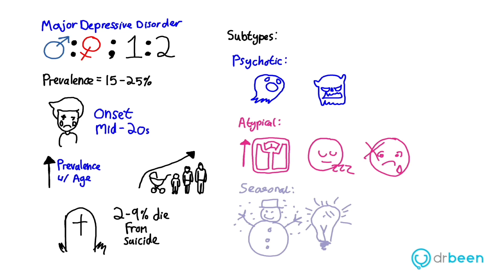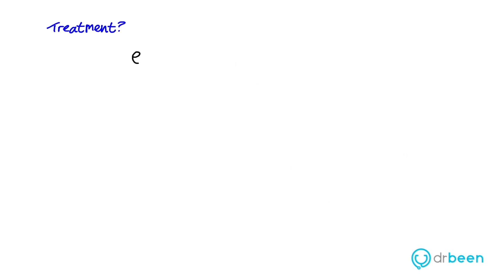So how do we treat someone with depression? Well, first we make sure that the patient is safe because there may be a high risk of suicide. In terms of pharmacotherapy, we could try a selective serotonin reuptake inhibitor.